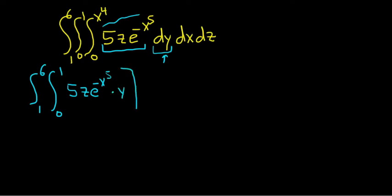And then y is going from 0 to x to the fourth. So we'll put the limits of integration here, 0 and x to the fourth. And then we still have the dx and the dz. And so now we evaluate this integral, and we plug in this for y first. We subtract, and then we plug in the 0. So this is the definite integral from 1 to 6. That's a lot of notation when you're doing these problems, so it takes some practice. 0 to 1.